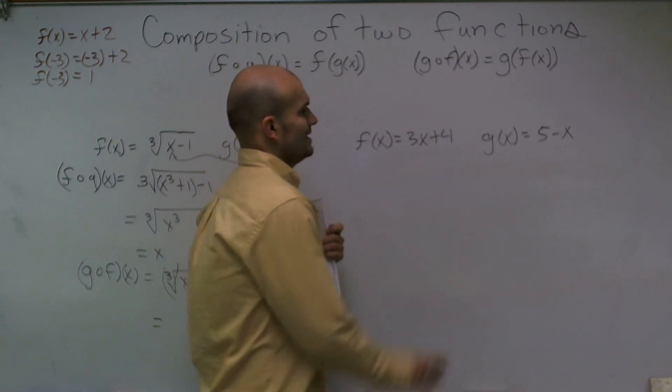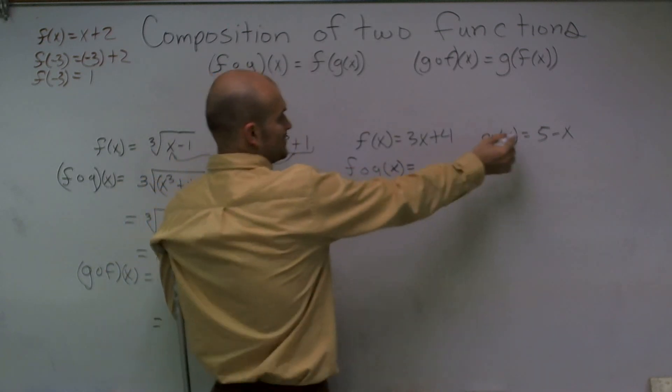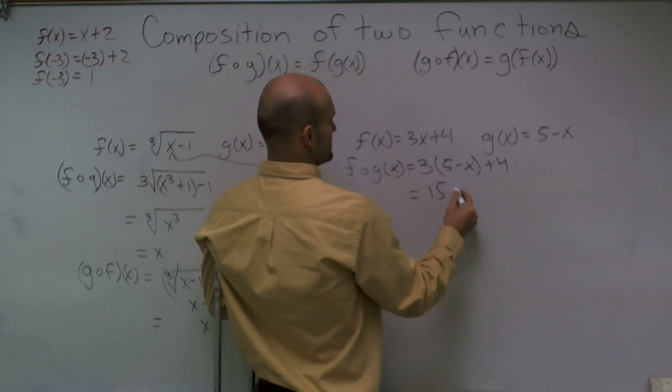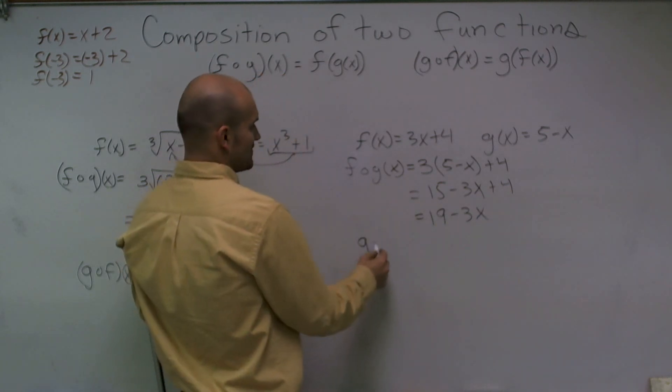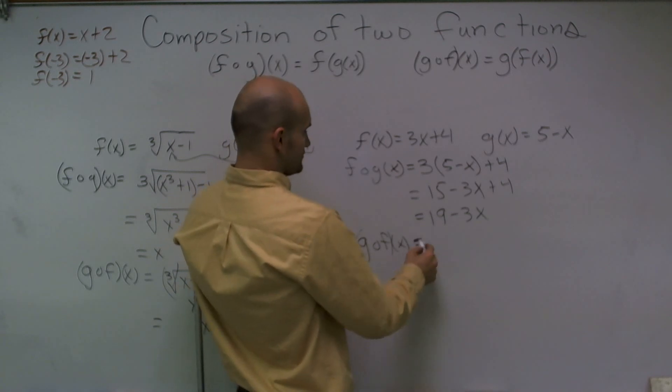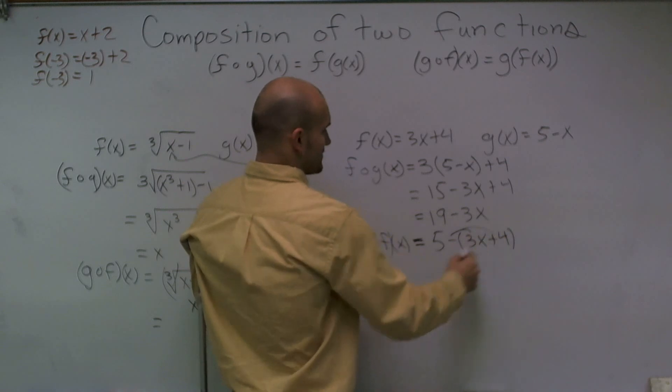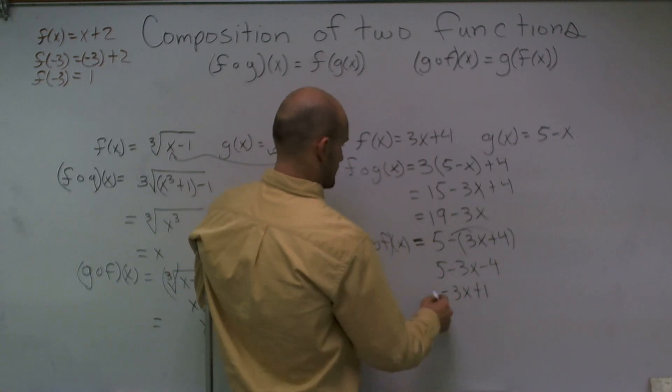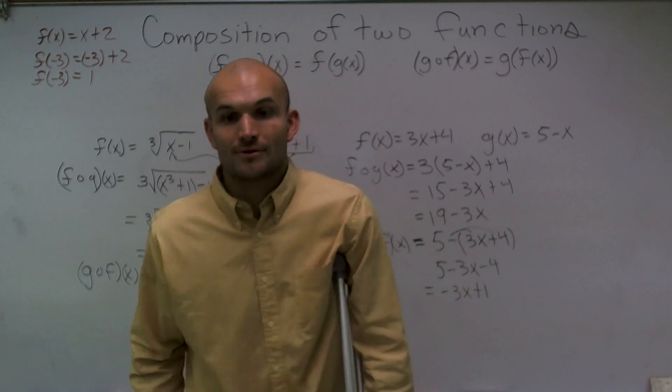Here, f of g of x equals my g function into my f of x function. So I write 3, not times x, but 5 minus x plus 4. 3 times 5 is 15 minus 3x plus 4. 19 minus 3x. To find my g of f of x function, I plug my f of x function in for my g of x. So I have 5 minus 3x plus 4. Distribute my negative sign, combine my like terms, so that I have my g of f of x equals negative 3x plus 1. All right, ladies and gentlemen, I hope that tutorial helped you out better.